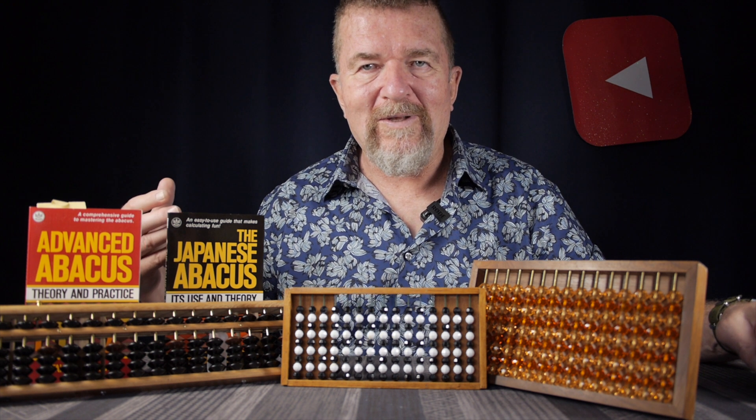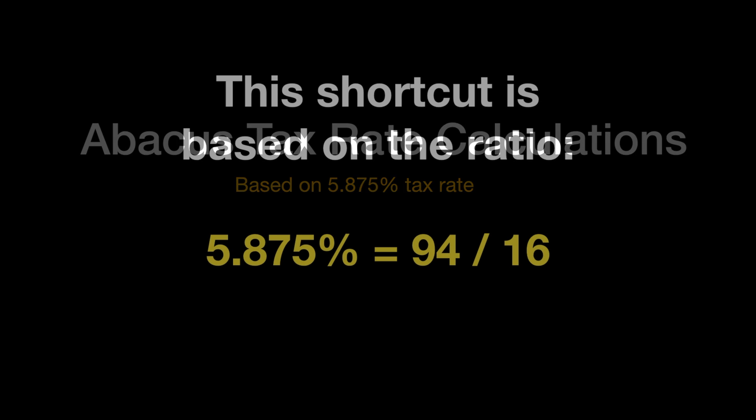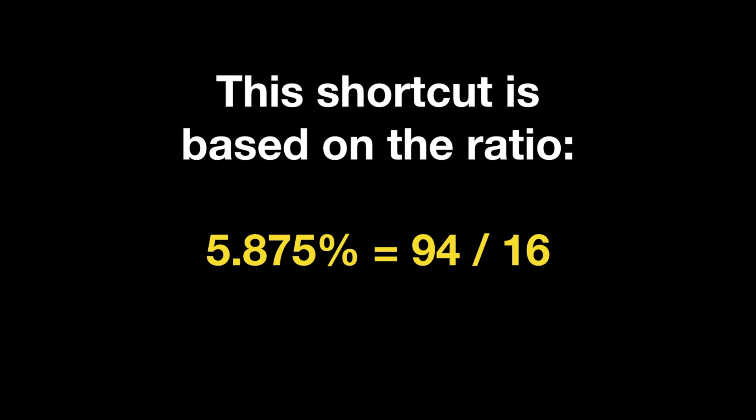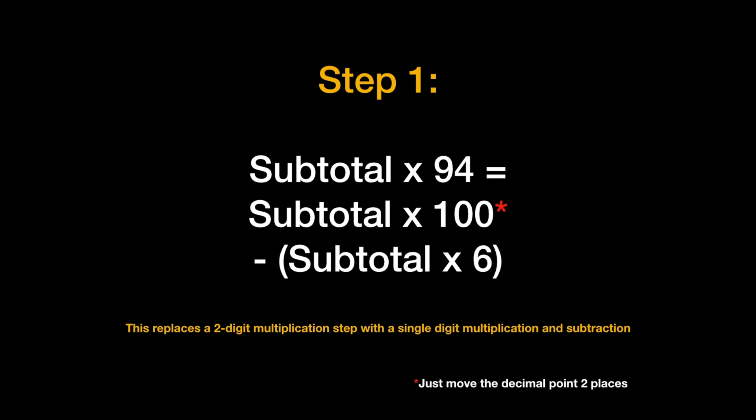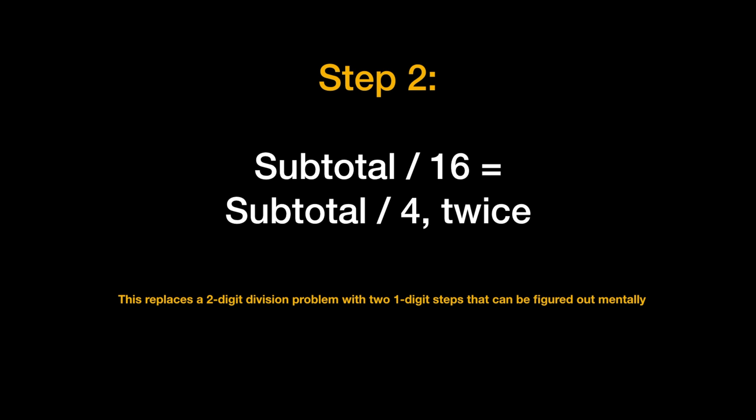The shortcut method is based on the fact that 5.875% equals 94 sixteenths. We find two shortcut methods: to multiply by 94, we multiply by 100 by mentally moving the decimal point two places right, then multiply by 6 and subtract that result — equivalent to multiplying by 94. To divide by 16, we simply divide by 4 twice, replacing a two-digit division with two single-digit division steps that can be figured out mentally.